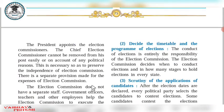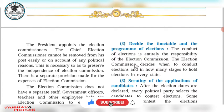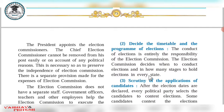Another function is deciding the timetable and program of elections. The Election Commission decides when to conduct elections and in how many stages. For example, Uttar Pradesh has 80 Lok Sabha seats — elections for all 80 seats cannot happen in a single day. So elections are conducted in phases (चरण), with different districts voting on different days.